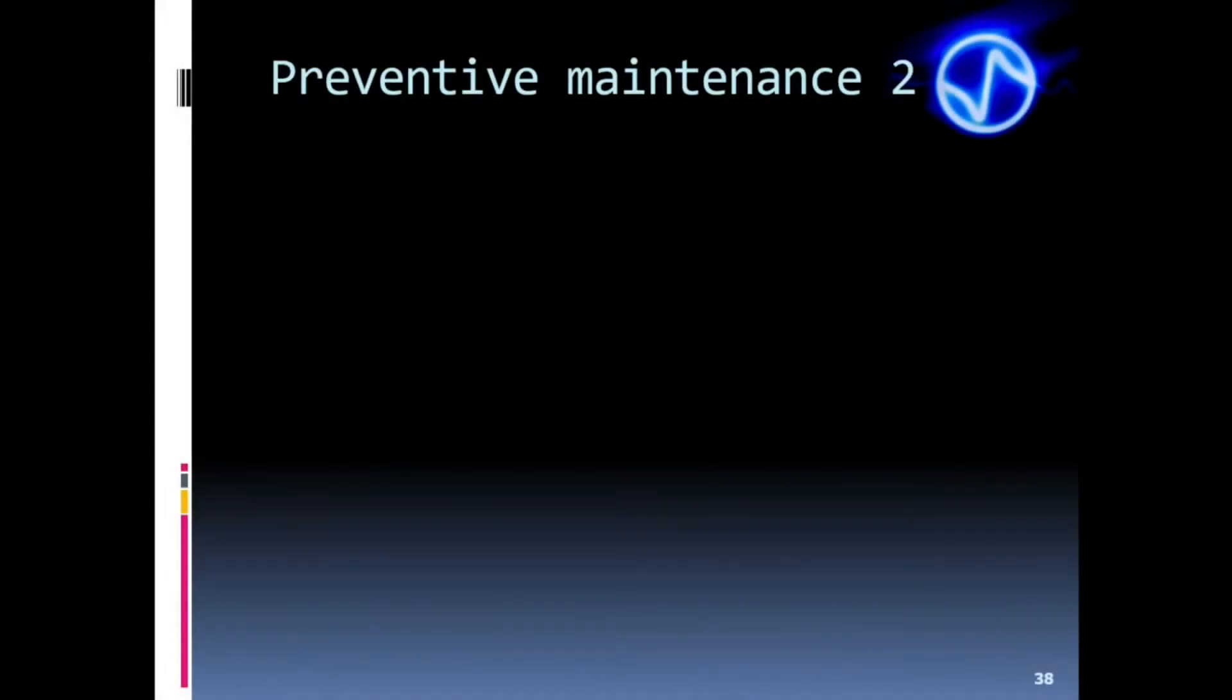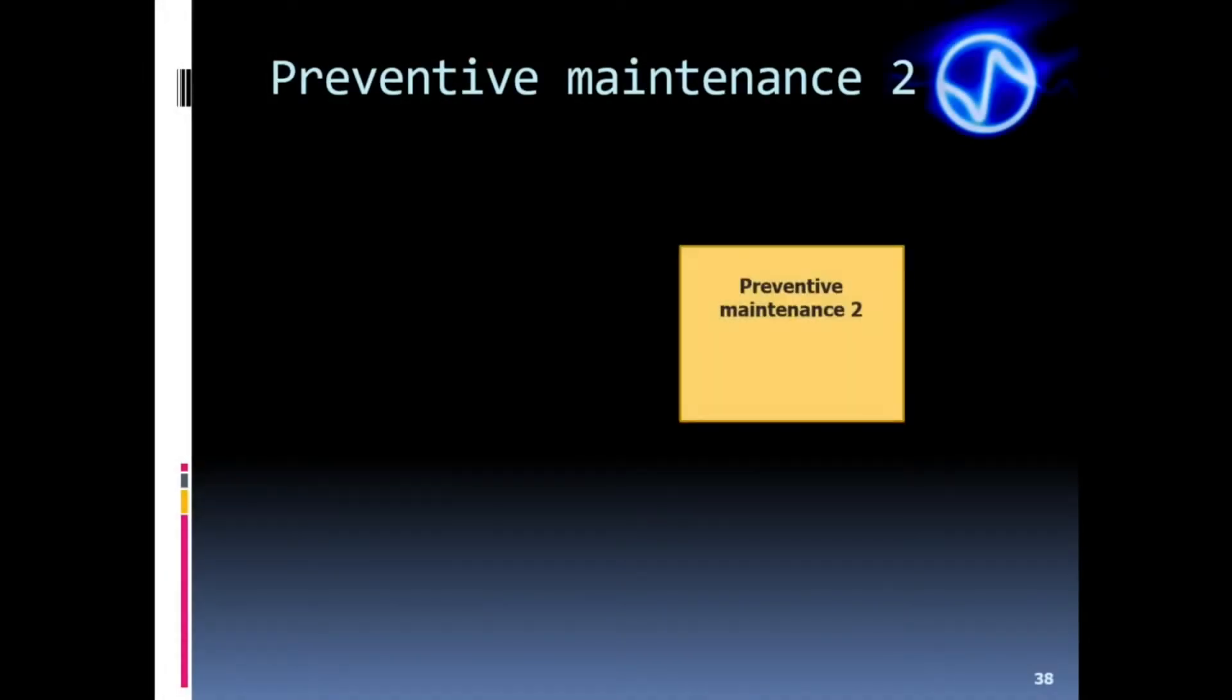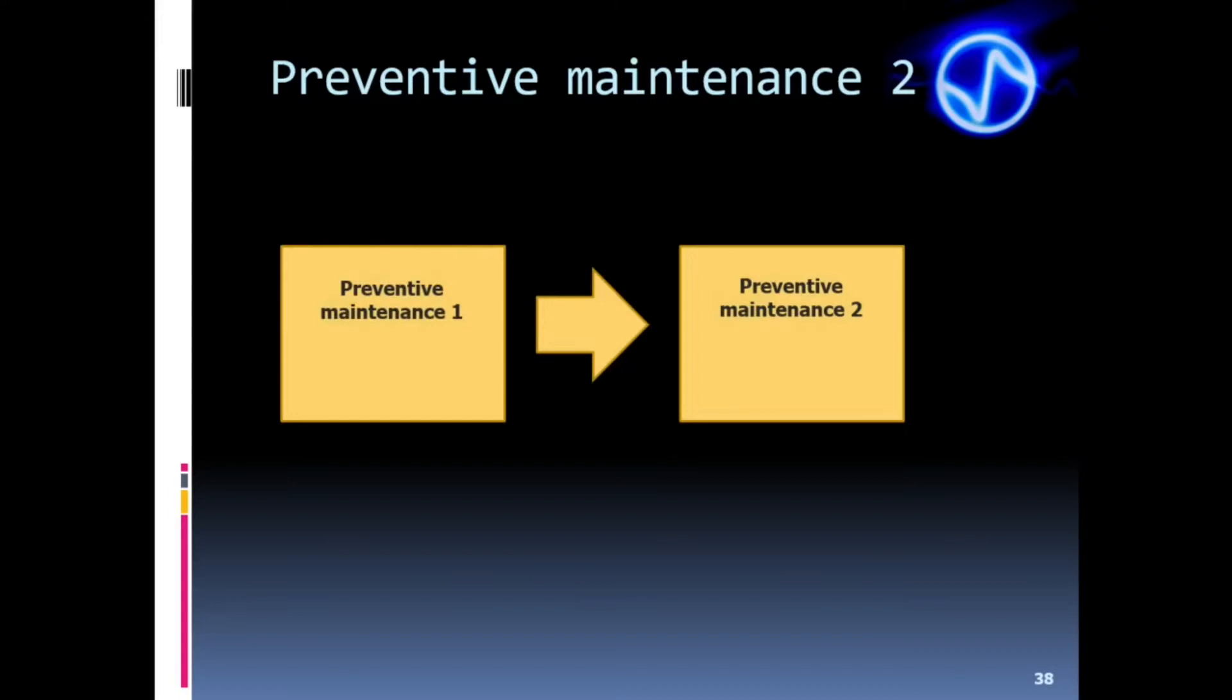We should perform preventive maintenance 2 only when preventive maintenance 1 was not enough to restore the good performance of the stack. Sometimes, even after doing all procedures from the previous classes, the acoustic stack continues to fail. When it happens, we must go deeper into the maintenance. Once coupling is not responsible for the failure, one or more of the elements are defective.